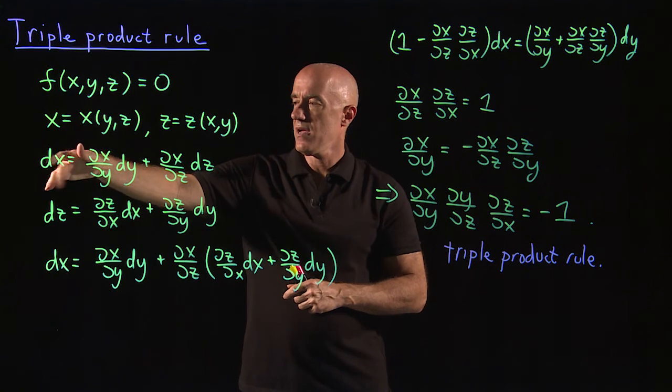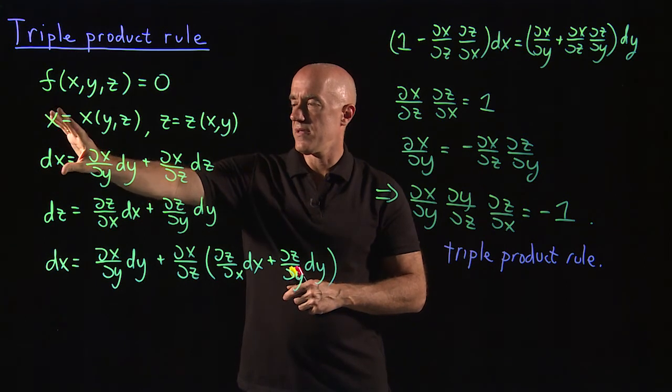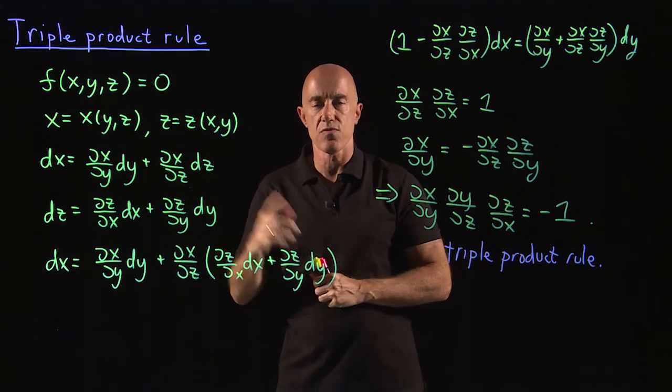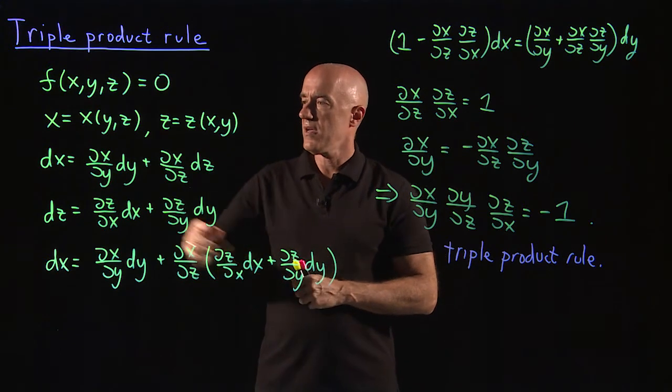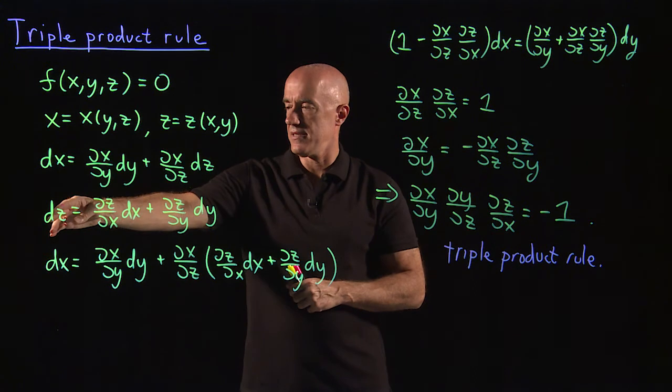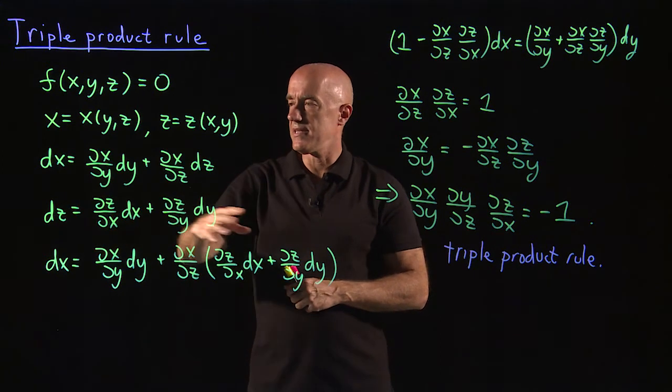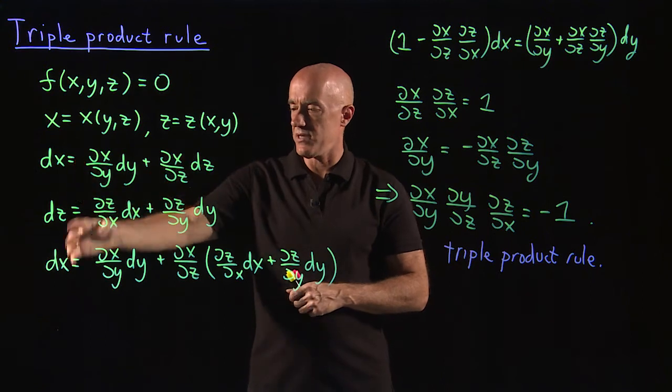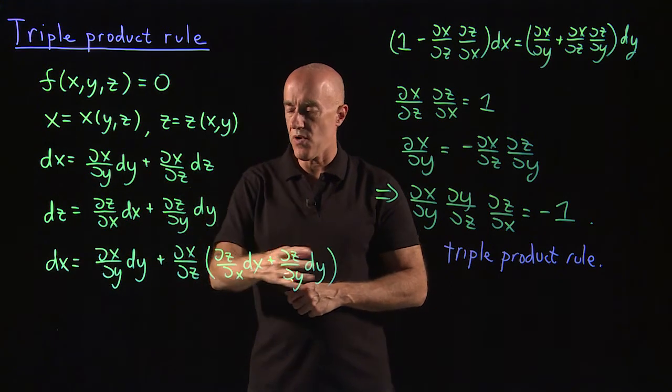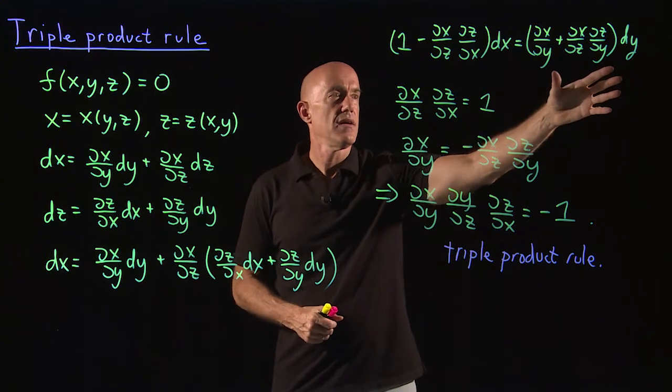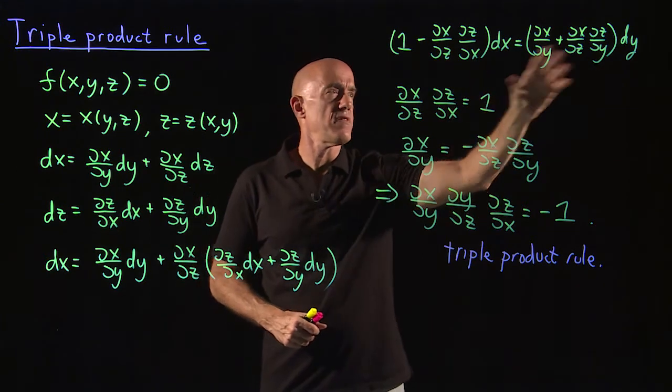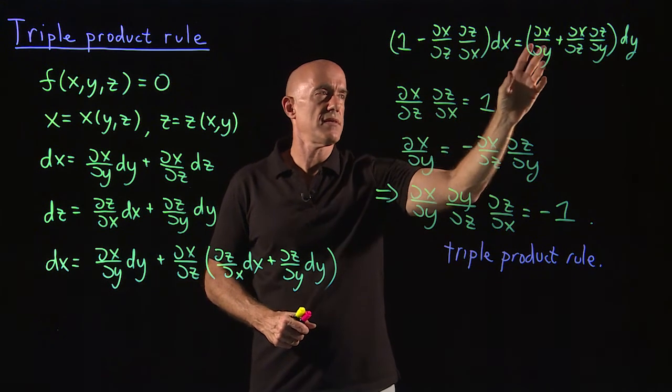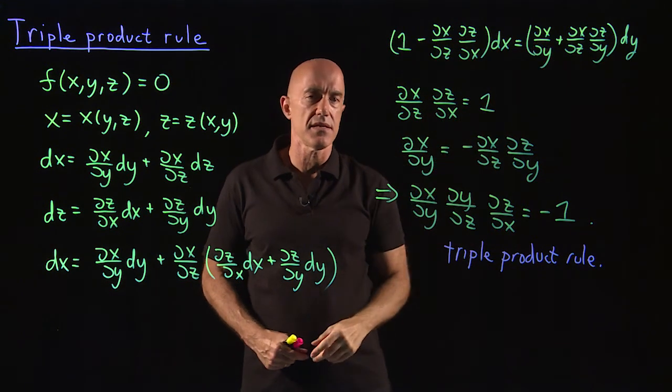When we look at these differentials, dx dz, we can vary these things, two of the variables at least independently. The third one depends on the other two. But we can look at dx and dz and we can use dz to eliminate dz in the dx equation. So we end up with an equation that just has dx and dy.